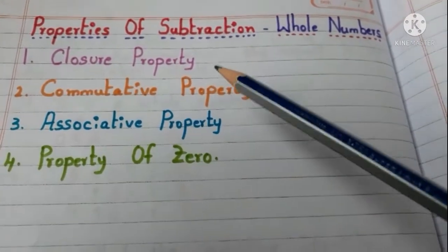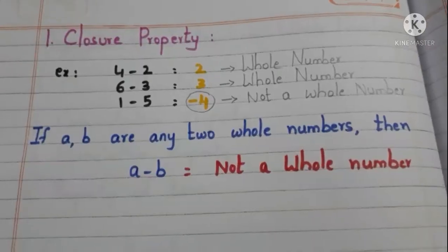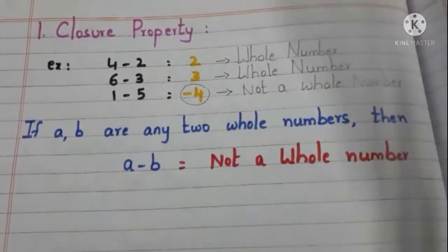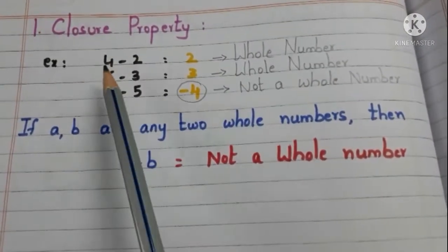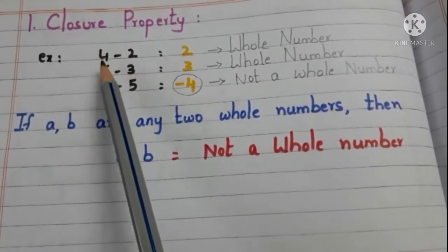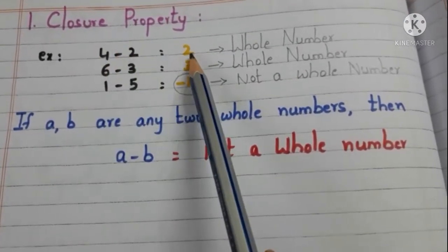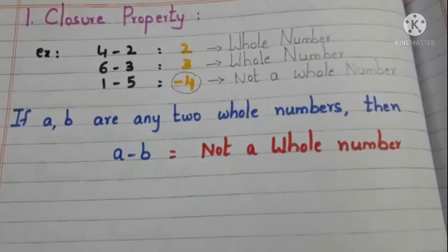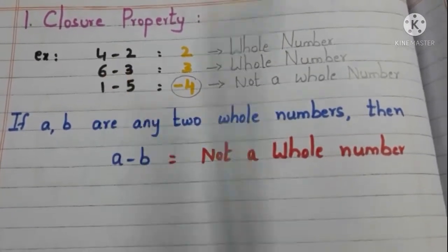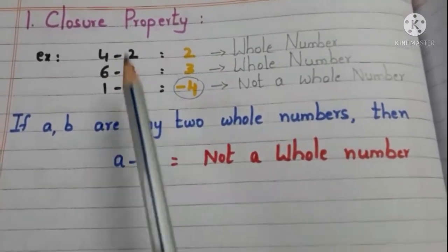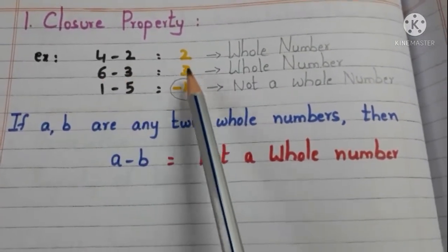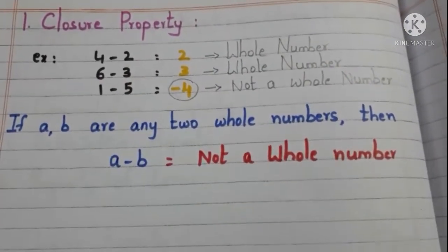First, we start with closure property. Observe the following examples. Take 4 and 2 and find the difference. 4 minus 2 is 2, and 2 is a whole number. Now, take 6 and 3 and find the difference. 6 minus 3 is 3, and 3 is a whole number.